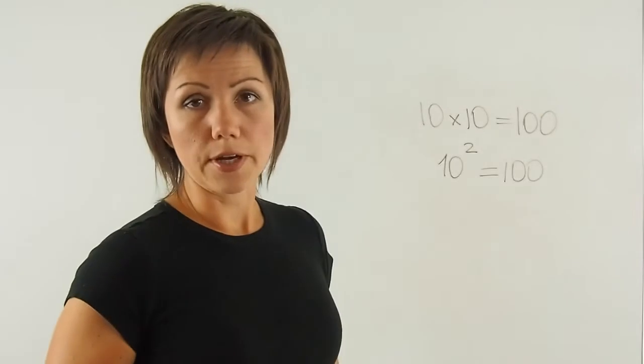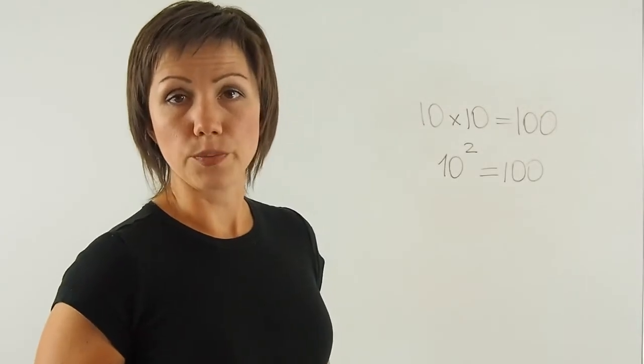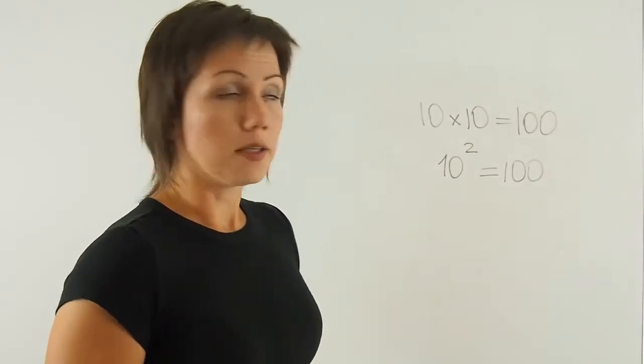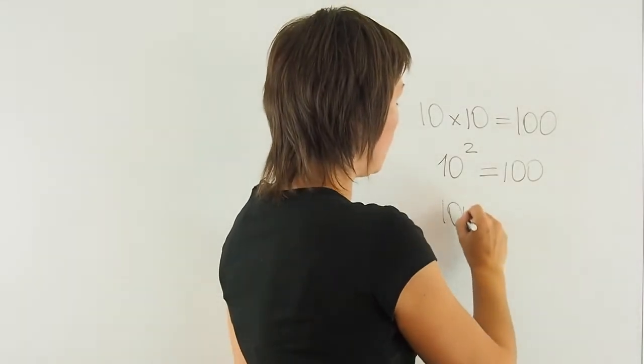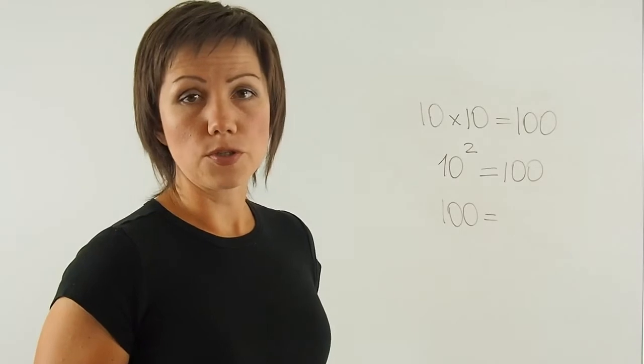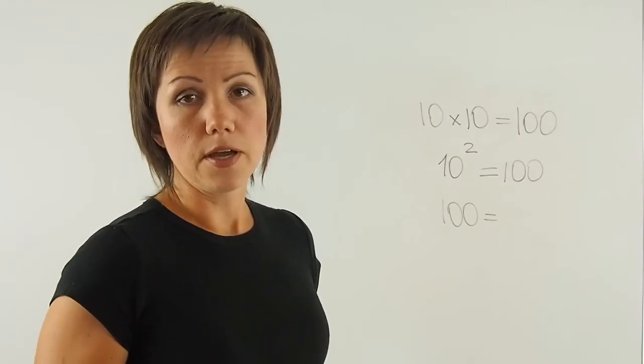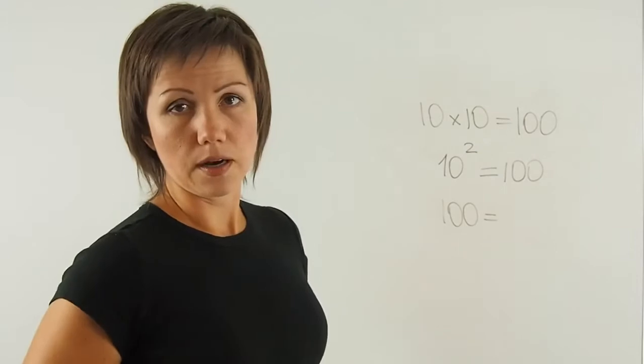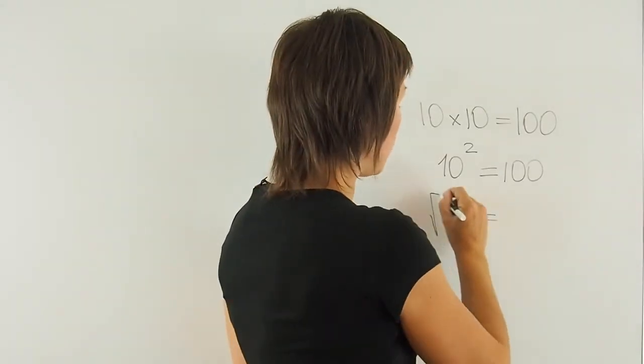We call this squaring. I'm squaring number 10. If I want to go from 100 to the two numbers, two possible numbers that were multiplied together in order for me to get 100, I will square root it.